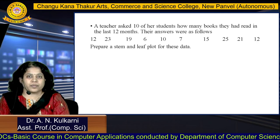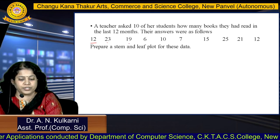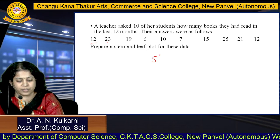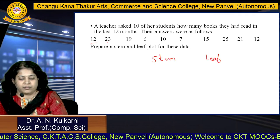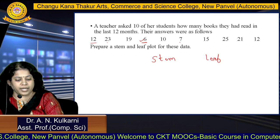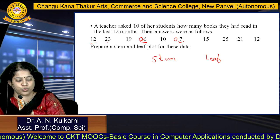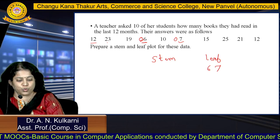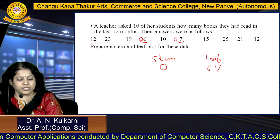Here is another example. The data items are: 12, 23, 19, 6, 10, 15, 12, 7, 25, 21. We have to prepare a stem and leaf plot. Arrange in ascending order. For 6 and 7, the stem is 0 and the leaves are 6 and 7. Since the stem 0 is common to both, write it only once with leaves 6 and 7.